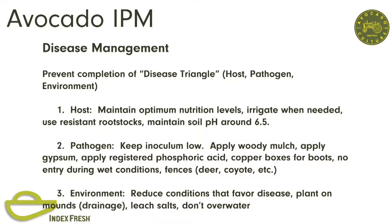We've got to manage diseases to create a healthy tree—without the healthy tree you're going to have more problems. So you want to be aware of the host, the environment, and the pathogen. For the host, the tree, you want to maintain optimum nutrition levels, irrigate when needed, use resistant root stocks, and maintain your soil pH around 6.5. Daryl Nelson at Fruit Growers Lab has been a proponent of this—it allows for greater uptake of nutrition, specifically zinc, nitrogen, and iron. We have more of an issue with this in Ventura County with heavy clay soils and high pH.